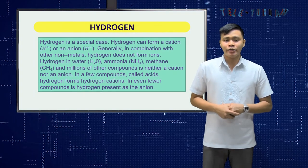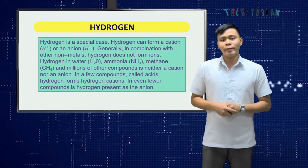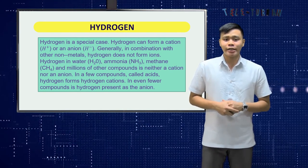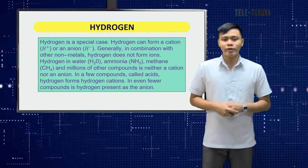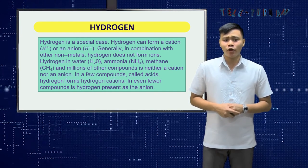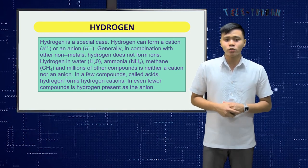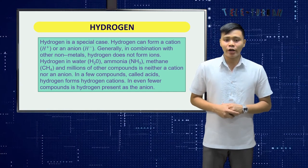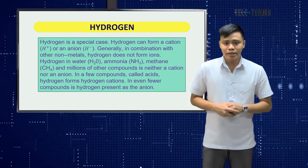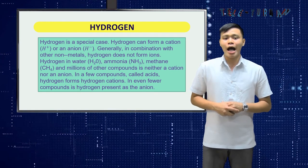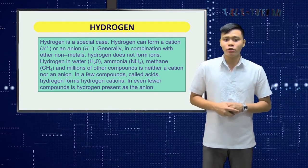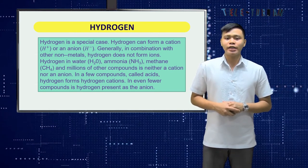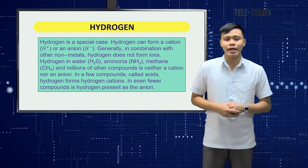Hydrogen is a special case. Hydrogen can form a cation, H⁺, or an anion, H⁻. Generally, in combination with other non-metals, hydrogen does not form ions. Hydrogen in water (H₂O), ammonia (NH₃), methane (CH₄), and millions of other compounds is neither a cation nor an anion. In a few compounds called acids, hydrogen forms hydrogen cations. In even fewer compounds is hydrogen present as the anion.